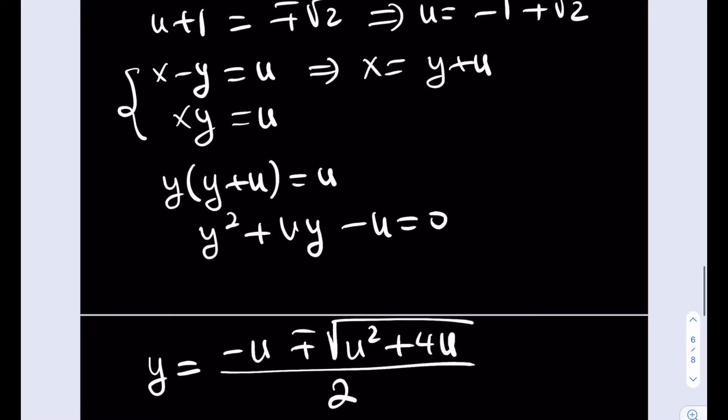Okay? Now, what was u? We know the value of u here. So we can just substitute that, and we're going to be getting the value of y. What is the value of x? Well, x is just equal to y plus u. We're just going to add u to this, which is there. So let me just take one of these. Let's say I got the positive one.